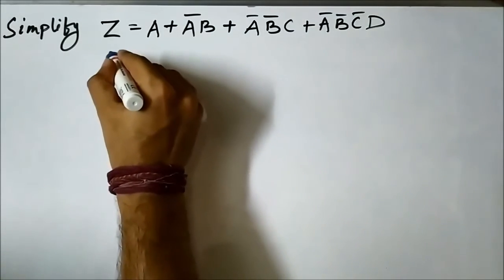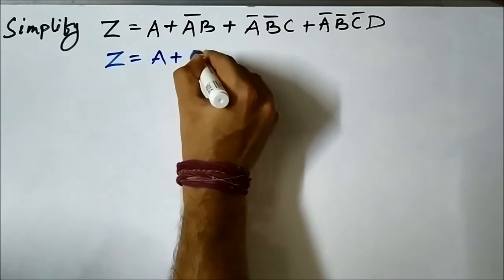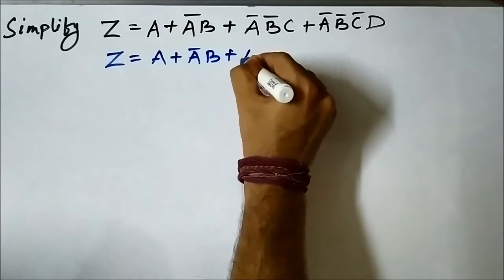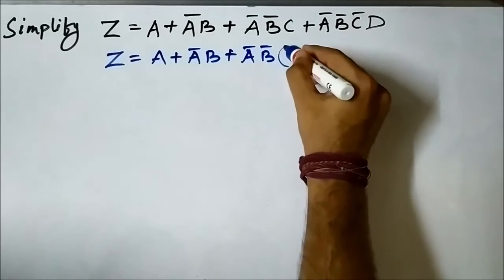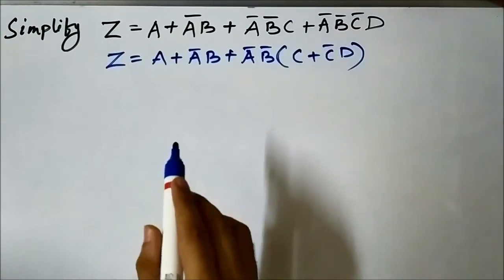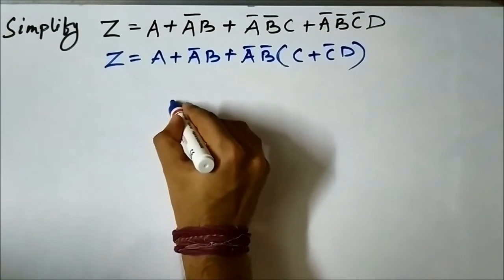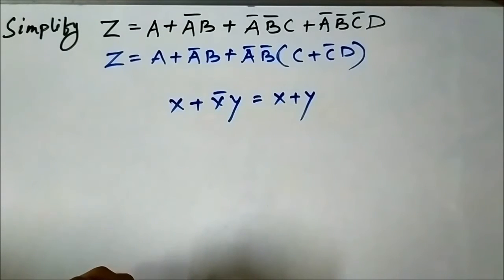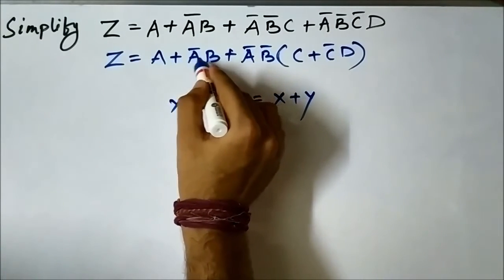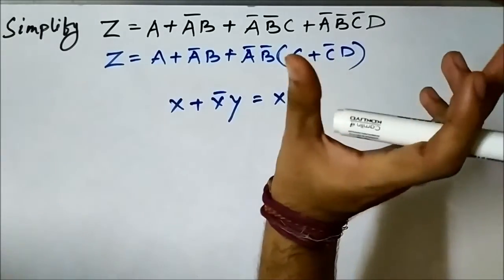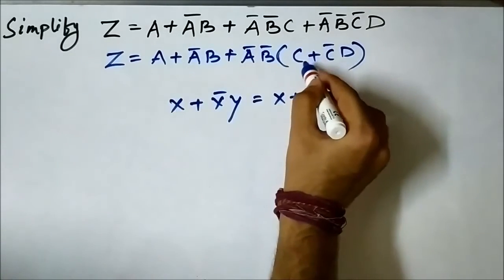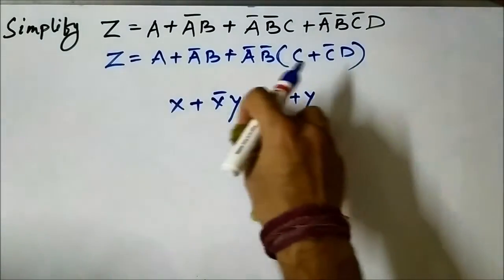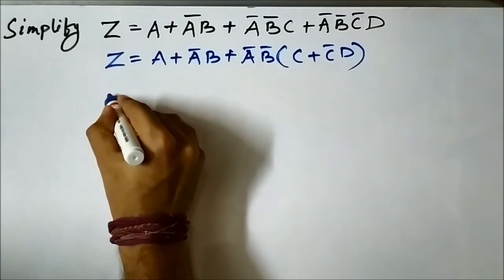Taking āb̄ as common gives the grouped form. We can apply the absorption rule x + x̄y = x + y in two places: a + āb becomes a + b, and c + c̄d becomes c + d. So the expression becomes z = a + b + āb̄(c + d).